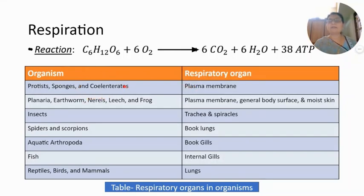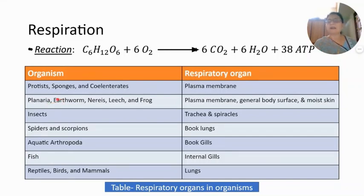In coelenterates, particularly Hydra, sea anemone, and jellyfish-like animals, the plasma membrane is also used for exchange of gases — oxygen and carbon dioxide. In the next phylum, Platyhelminthes, the example being Planaria, flatworms use the plasma membrane or general body surface for exchange of gases.